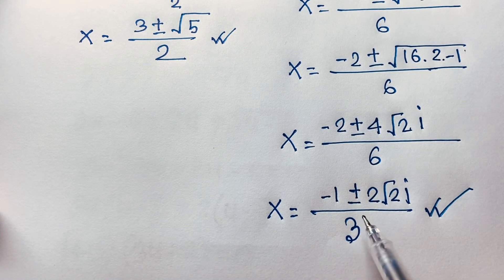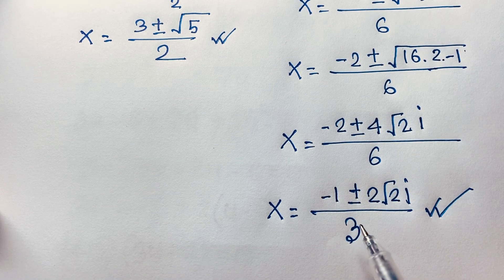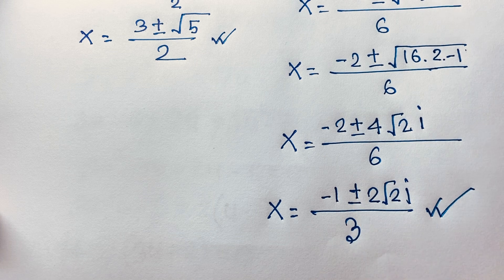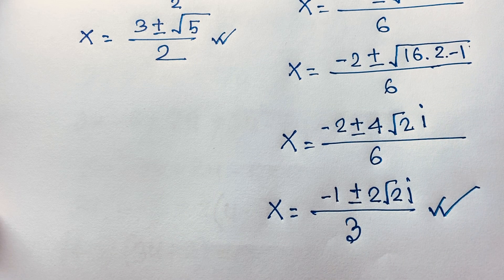Our final answers are: x equals (3 plus or minus square root 5) over 2, and x equals (minus 1 plus or minus 2√2·i) over 3. Thank you all. If you enjoyed this video, please subscribe to my channel for other interesting videos. Goodbye, take care.